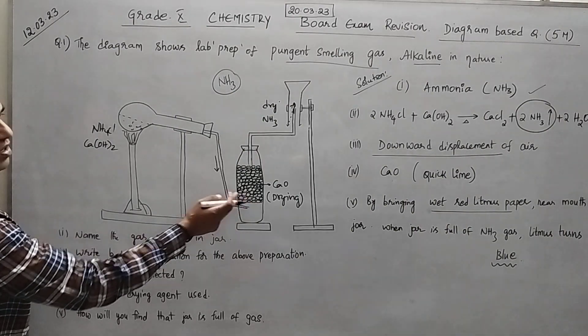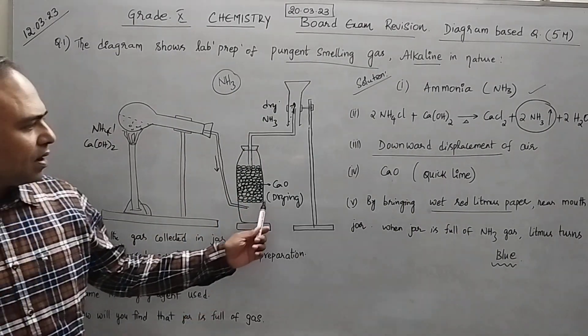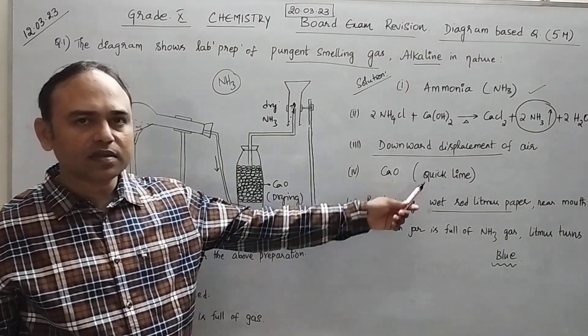Next. Name the drying agent used. So already we have written here calcium oxide is the drying agent. You can also call it as quick lime.